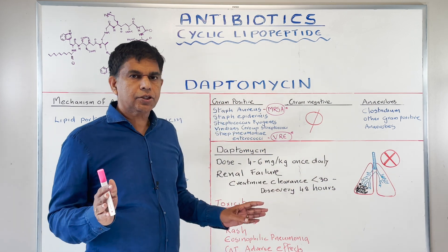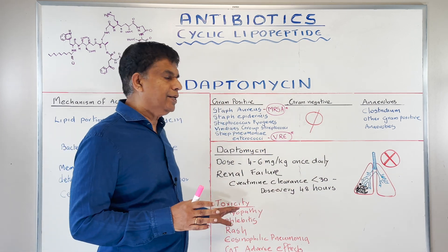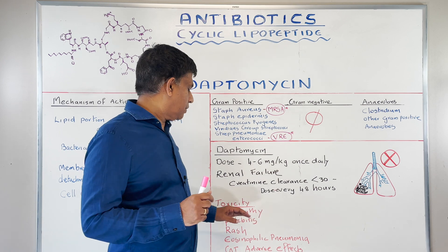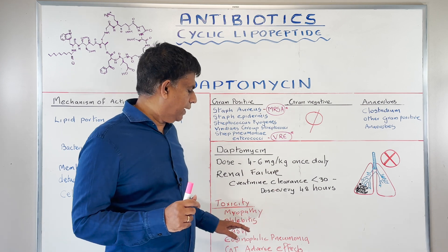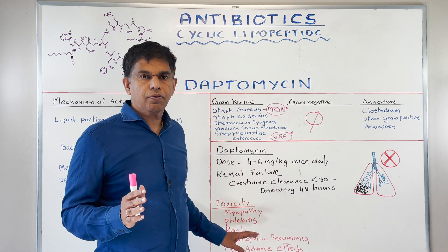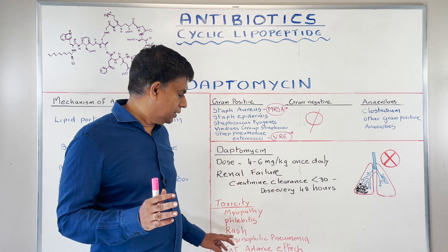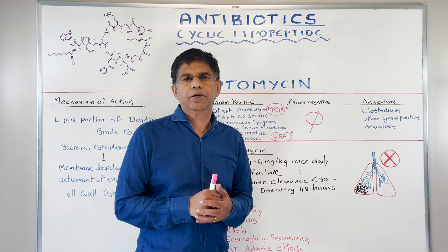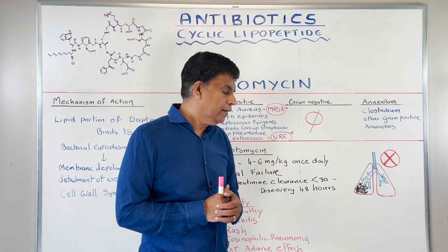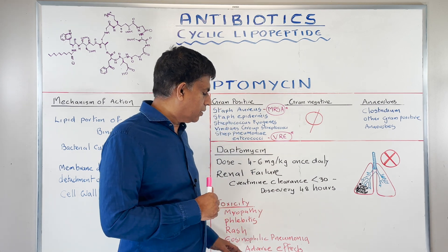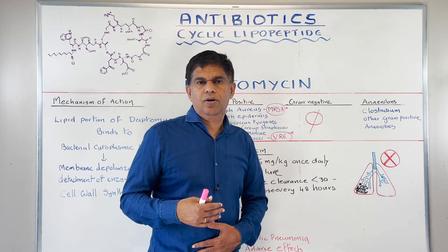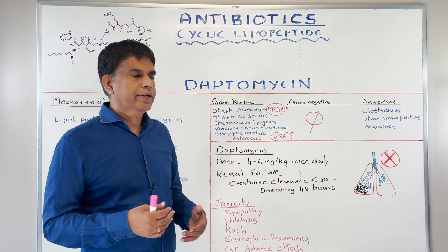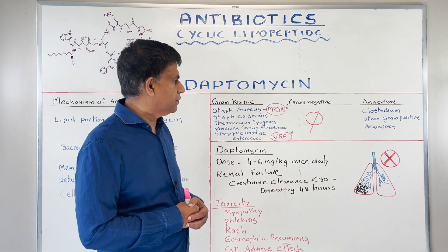Let's look at the toxicity. Daptomycin can cause myopathy and rhabdomyolysis. It can cause rash. Anything unusual is eosinophilic pneumonia. And it can also cause GI adverse effects like nausea, vomiting, and diarrhea — all the GI complications as well.